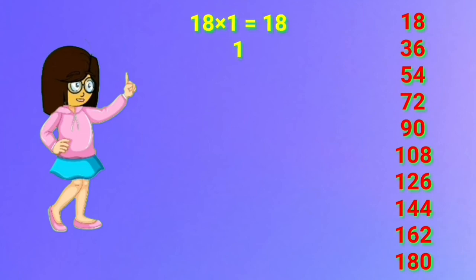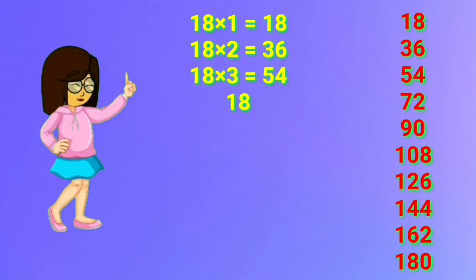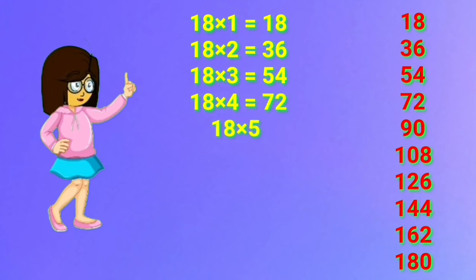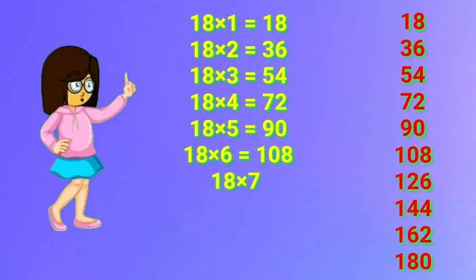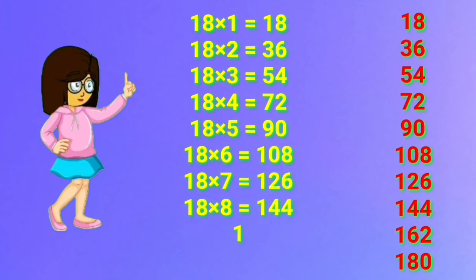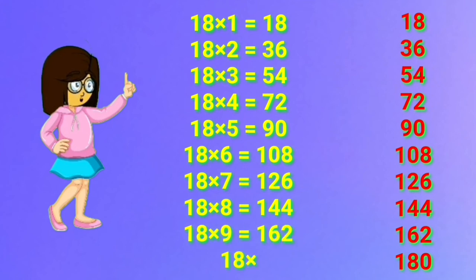18 one's are 18. 18 two's are 36. 18 three's are 54. 18 four's are 72. 18 five's are 90. 18 six's are 108. 18 seven's are 126. 18 eight's are 144. 18 nine's are 162. 18 ten's are 180.